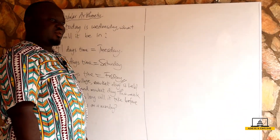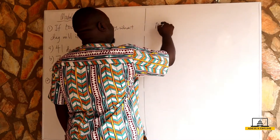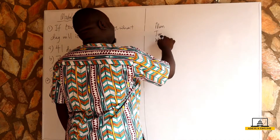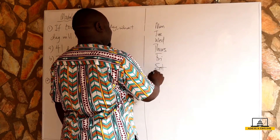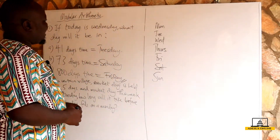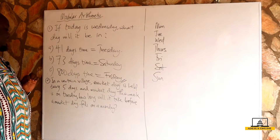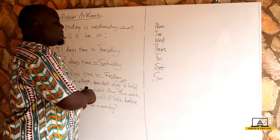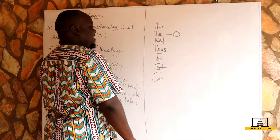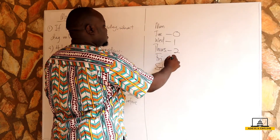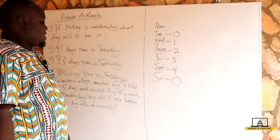Listing the days of the week: Monday, Tuesday, Wednesday, Thursday, Friday, Saturday, and Sunday. Market day this week is on Tuesday, so we start at zero with Tuesday. Every five days means we count one, two, three, four — and the next market day is on Sunday. We want the market day to fall on Monday, so we continue.